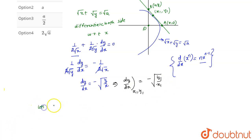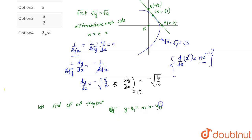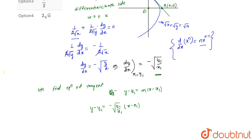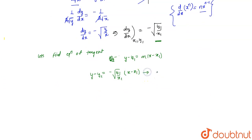Now let's find the equation of the tangent. The equation of a tangent at any point (x₁, y₁) is given by y − y₁ = m(x − x₁). Here y − y₁ = −√(y₁/x₁) · (x − x₁), where the slope at point (x₁, y₁) is −√(y₁/x₁).